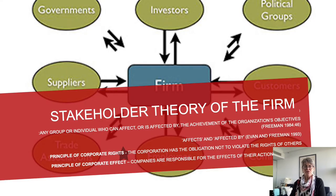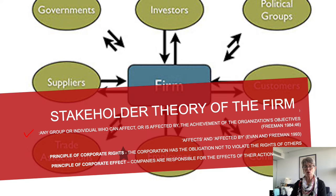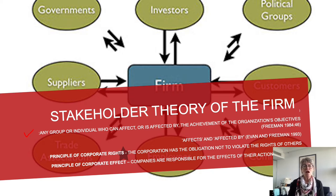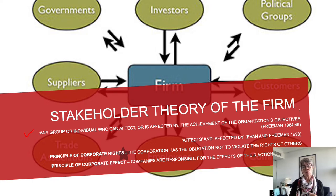Stakeholder theory of the firm - a good definition is: any group or individual who can affect or is affected by the achievement of the organization's objectives. Ed Freeman - have a Google of him, he's done amazing work and is still publishing - has been one of the key players in developing stakeholder theory. It's very much a two-way street: to be a stakeholder, you don't just have to be impacted by what an organization does - you can also impact or influence an organization.